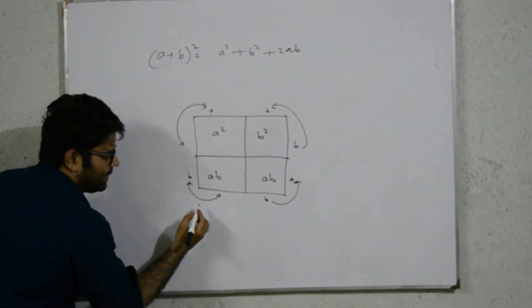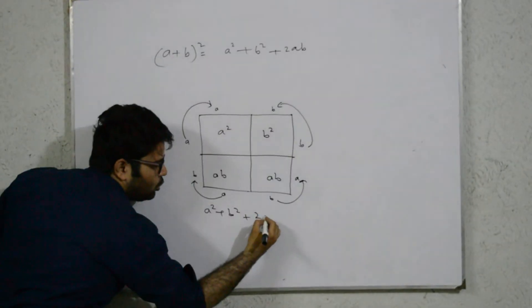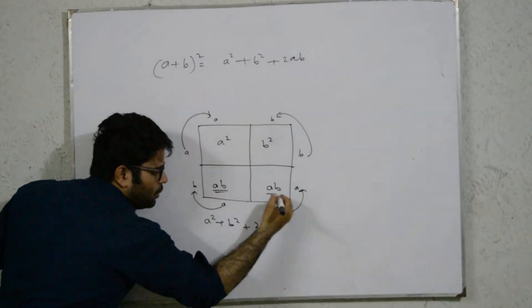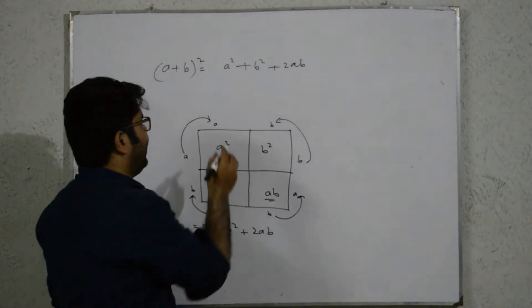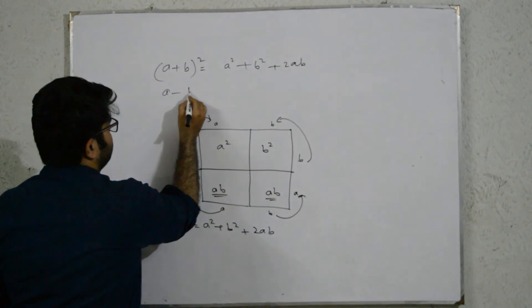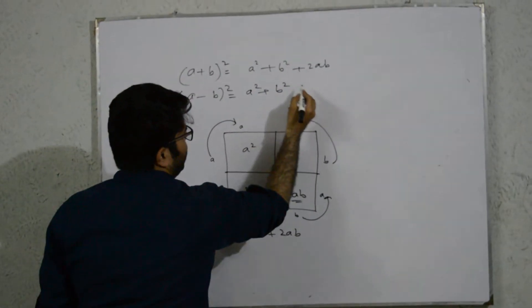If you are seeing this situation, then we have a squared plus b squared minus 2ab. This is two times ab. Now, we say something about the negative side. How will it happen?